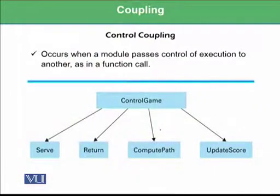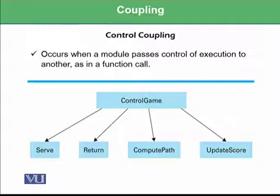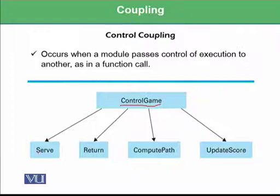There are different types of couplings. One is known as control coupling. This occurs when a module passes control of execution to another, as in a function call. For example, the main module 'control game' calls the 'serve' module, and when control is passed to the serve module, this is called control coupling.